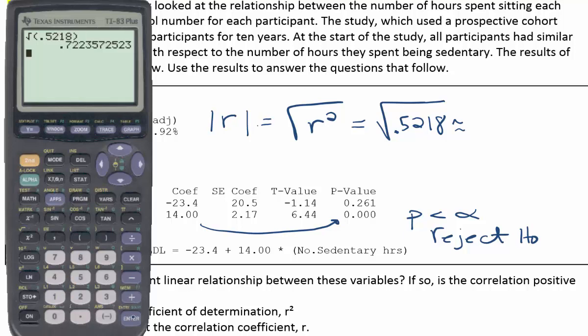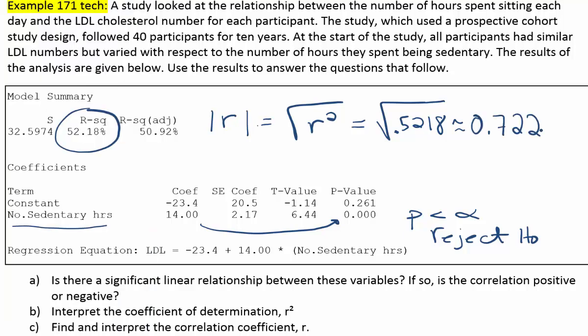And when we do that, we get 0.722 to three decimal places. Now remember, that's only the absolute value of r. We don't know the sign of r by doing this. We just know its absolute value. So we don't know if that r should be positive or negative, unless we have the slope. And we do have the slope here. We can see that the slope in our equation is positive. The coefficient for the slope variable is positive. Therefore, r should be positive. So try to remember that the slope and r always have the same sign.